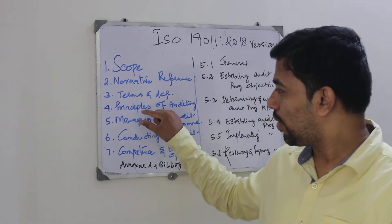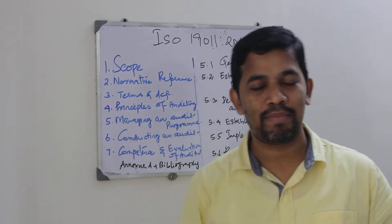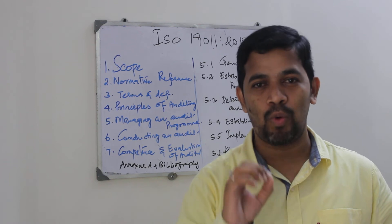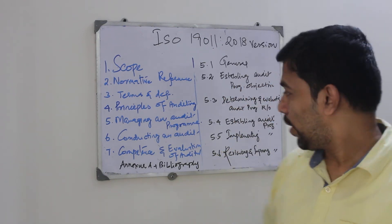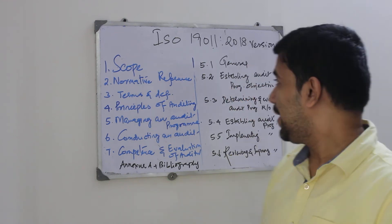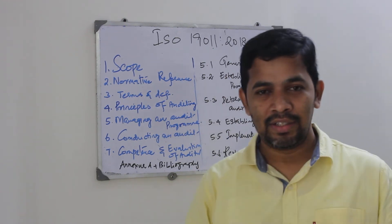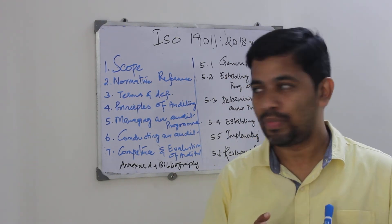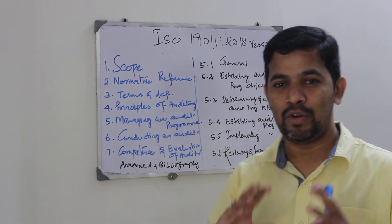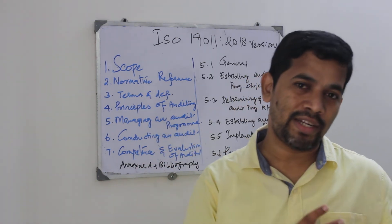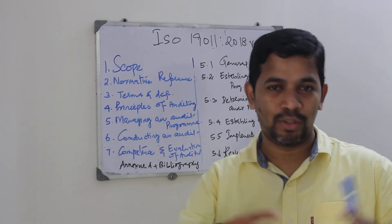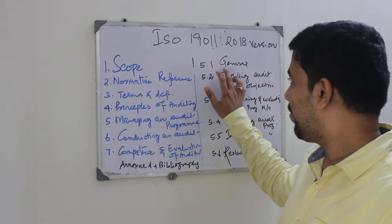So now we are going to talk about clause number five: managing audit program. Managing audit program has got six sub-clauses. The first one is General — when you set up an audit program, you need to have an opening meeting, you need to select an auditor, the auditor shall not be from their own function, and various other things. That's what it clarifies in General.